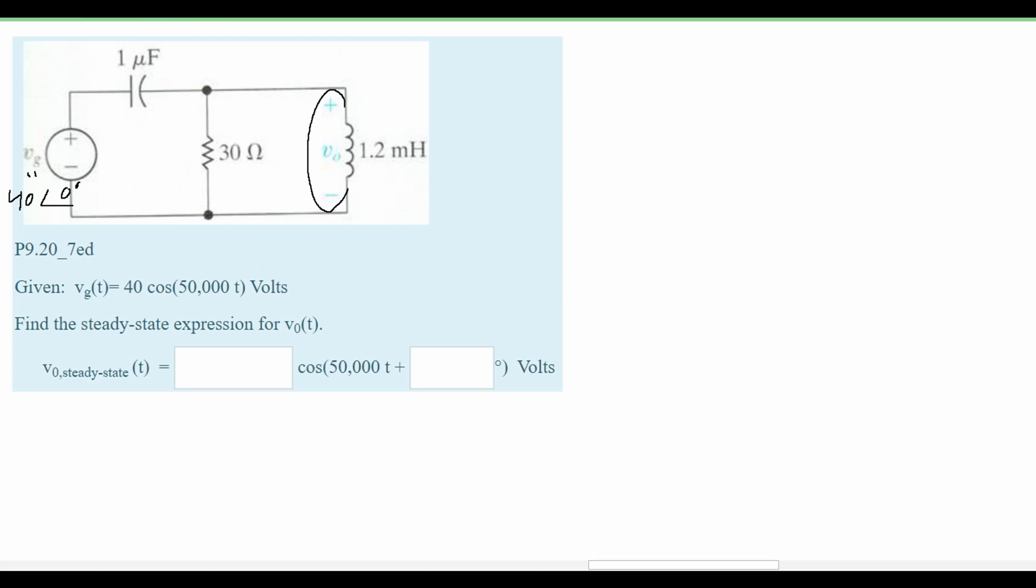We know that this voltage and this voltage are going to be the same because they are in parallel, so we'll have a plus minus and a V₀ here. To solve this from here we can do a node voltage analysis where we analyze the currents going in and out of this node and set it equal to zero.